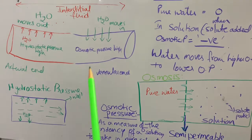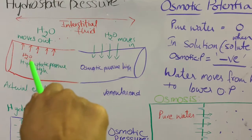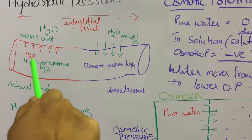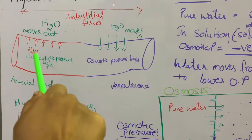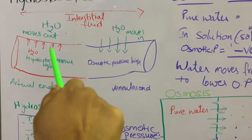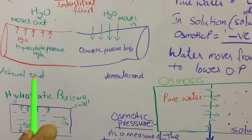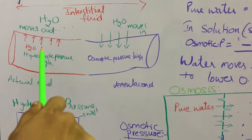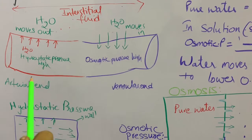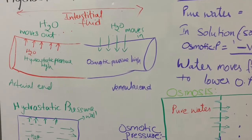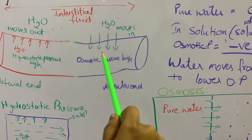This pressure is important at the arterial end and at the venular end. At the arterial end, the water present in the blood — 92% of water is present in the plasma — these water molecules try to go outside due to the hydrostatic pressure, because the hydrostatic pressure is high at the arterial end. That's why the water molecules tend to leak into the interstitial fluid; they move out due to the high hydrostatic pressure at the arterial level.